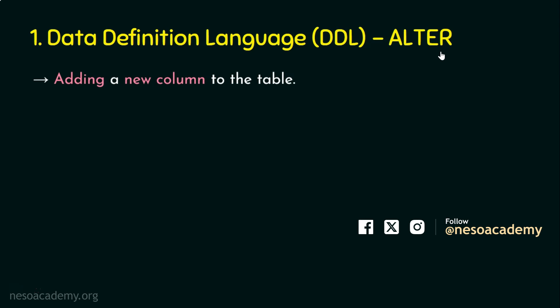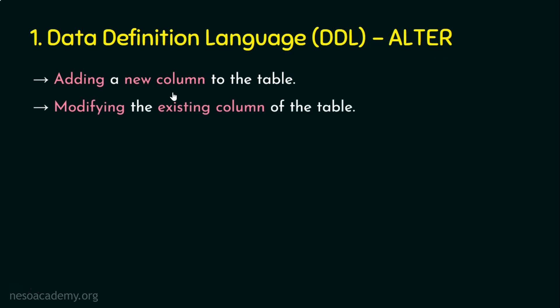Another scenario: we have a table with a column 'student_name' defined as VARCHAR(50). A new student joins whose name has 60 characters, but the column only accepts 50. We wouldn't deny that student admission, so the administrator needs the option to increase or modify the column. ALTER is also used for modifying an existing column of a table.